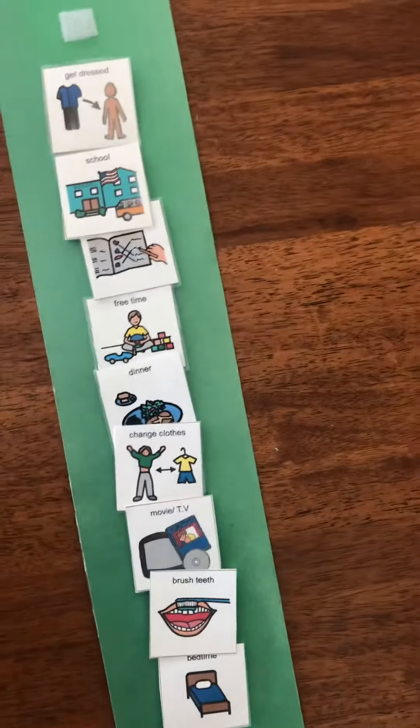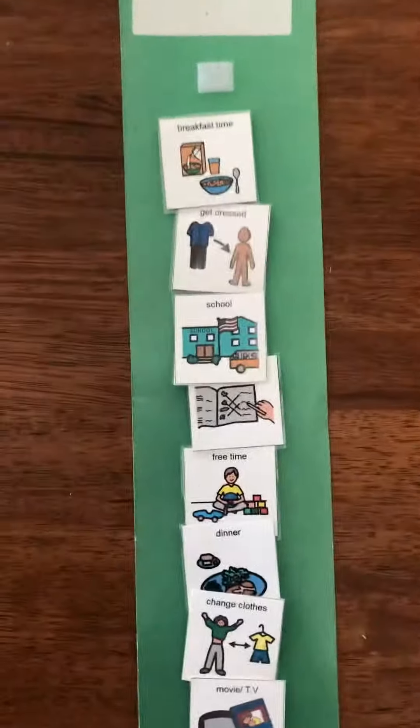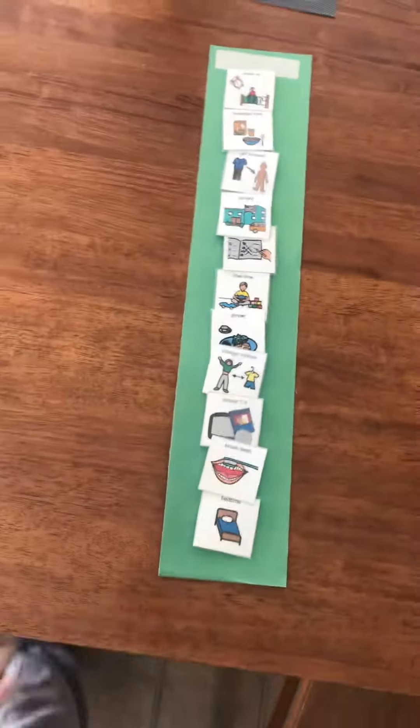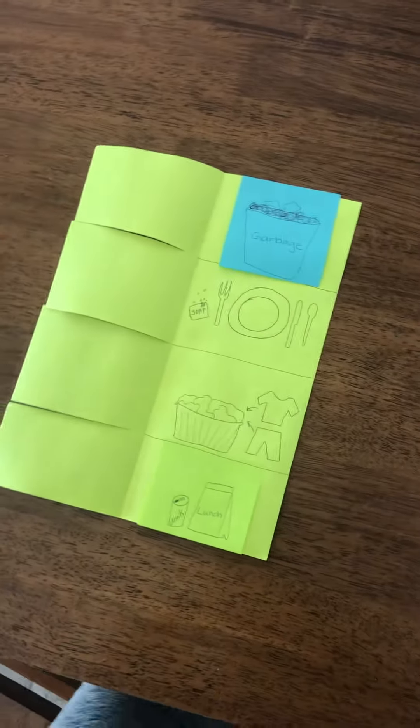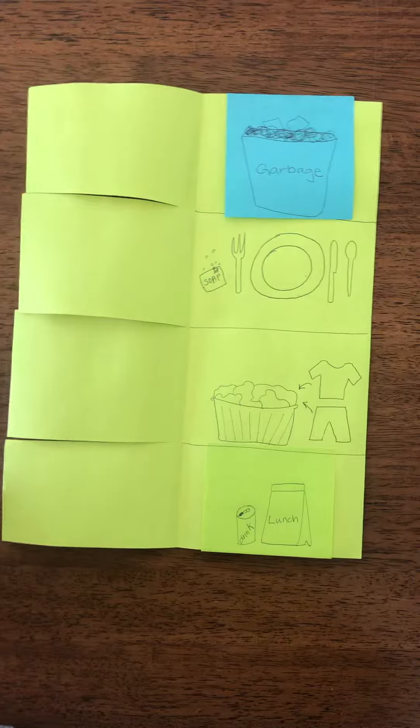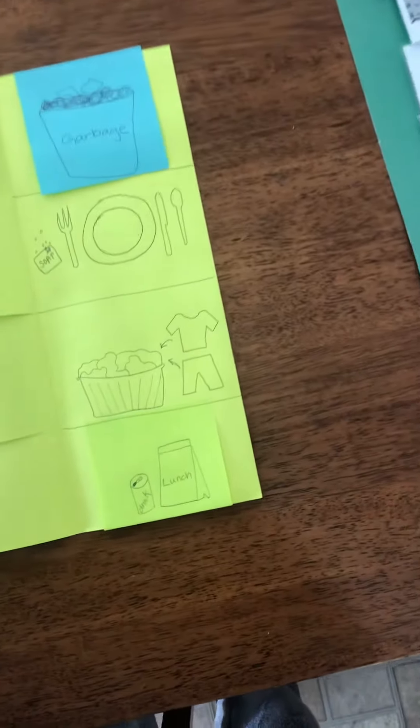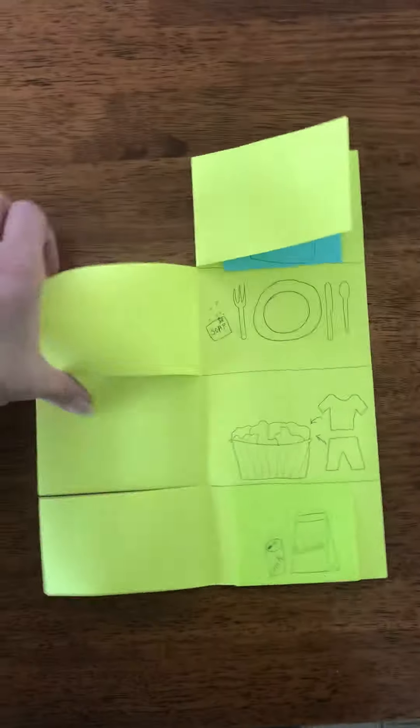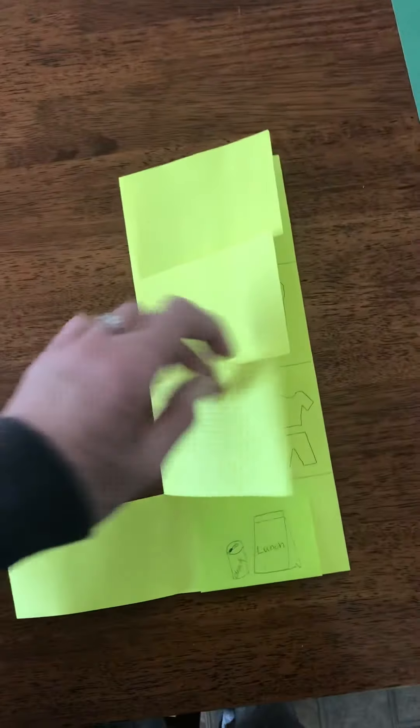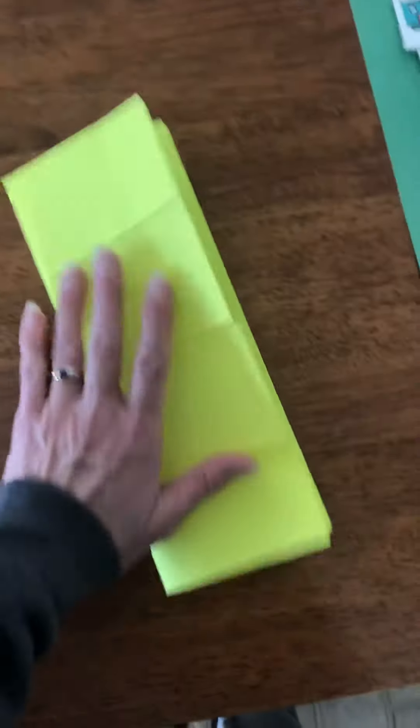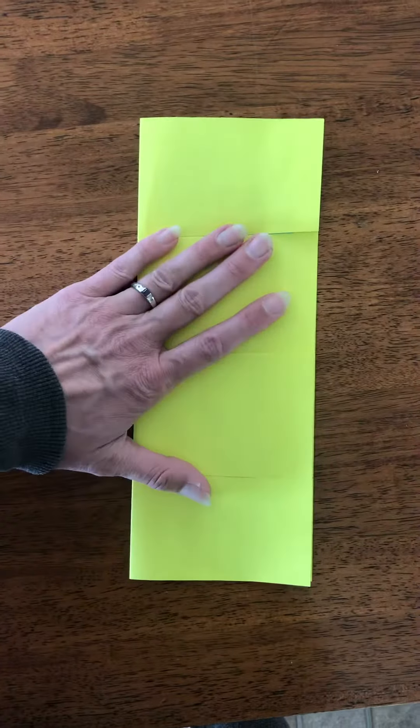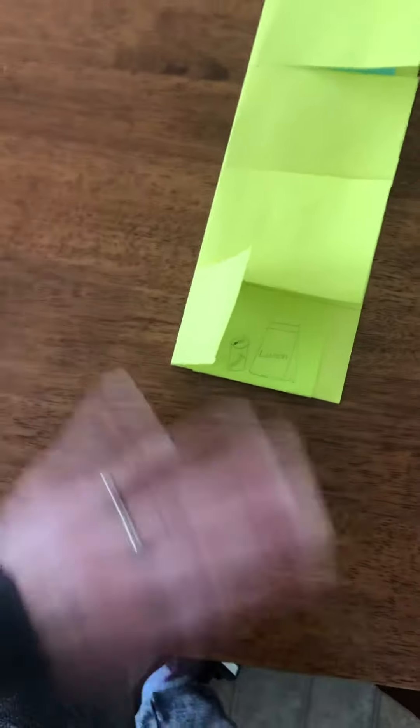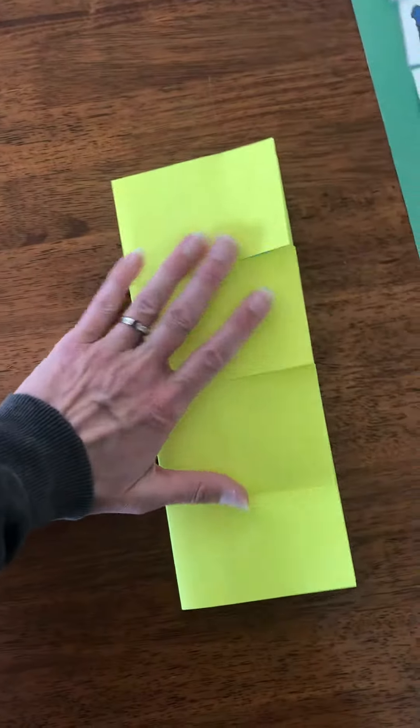For those that do not have access to things like Boardmaker, which is probably mostly everybody, I wanted to give you an example of another kind of schedule. This one here is just one that I made with a piece of paper. All I did was just fold it in half the hot dog way, the long way. Fold it in half like this and then I just cut four for my example. You can have more if you want or you can even make a longer schedule depending on how many things you're trying to fit on a schedule.